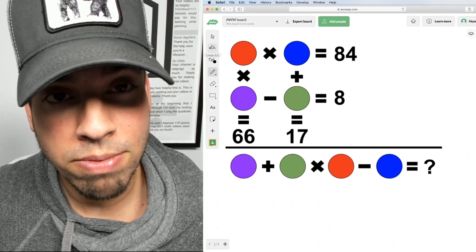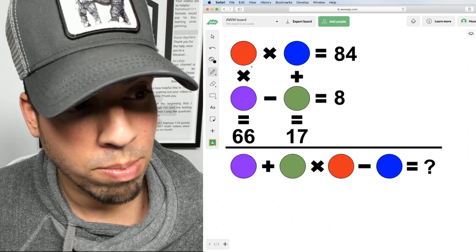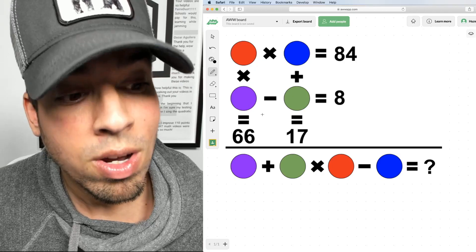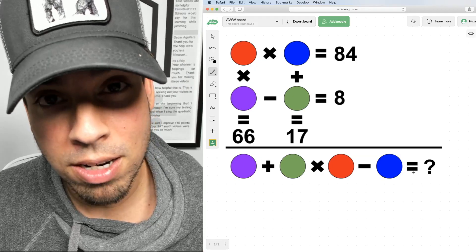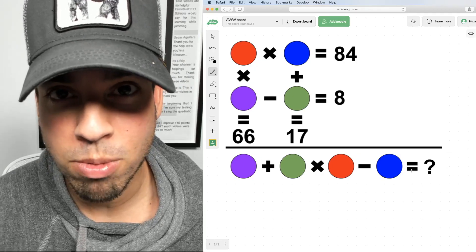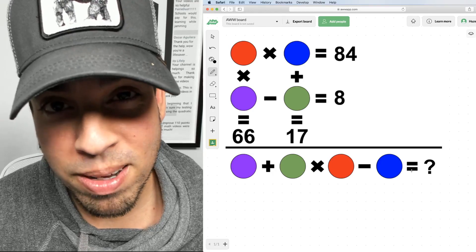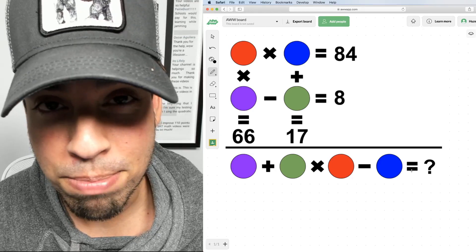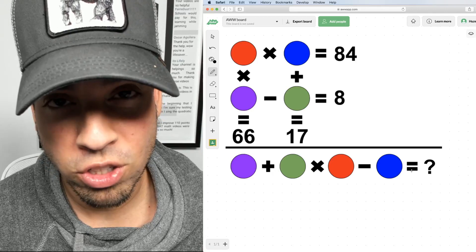So what you want to do is figure out what each value represents, what each circle represents in terms of a numerical value, then apply it to the equation at the bottom and solve for that question mark. Go ahead and hit that pause button and see if you can figure it out. When you're ready, hit play and I'll give you the explanation.